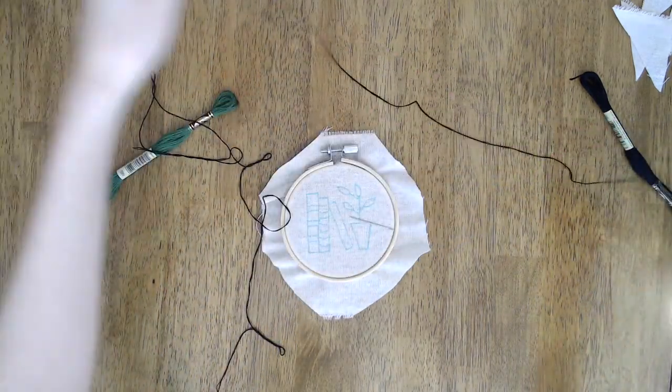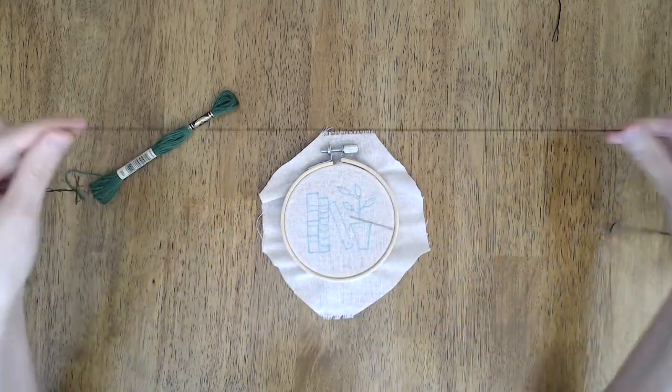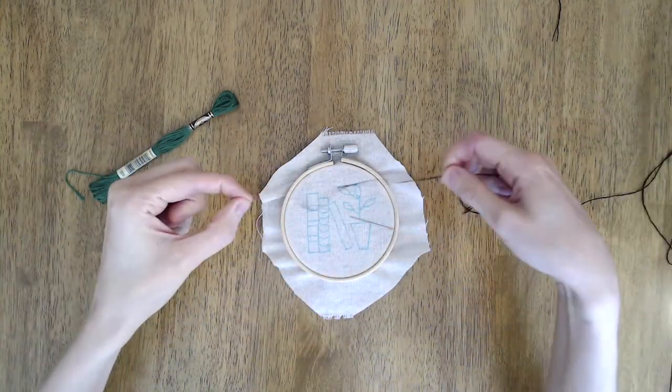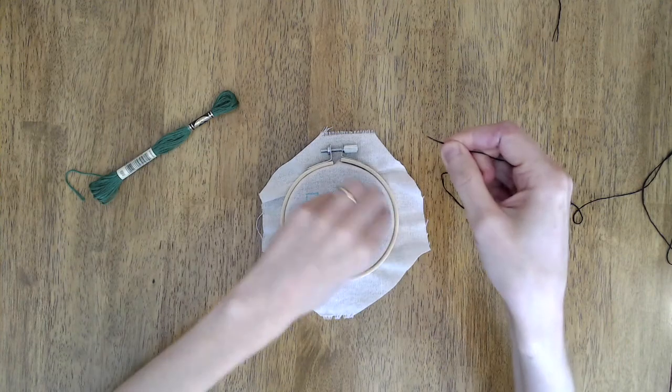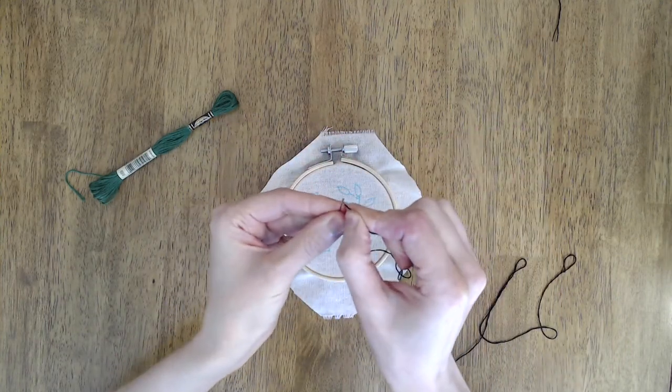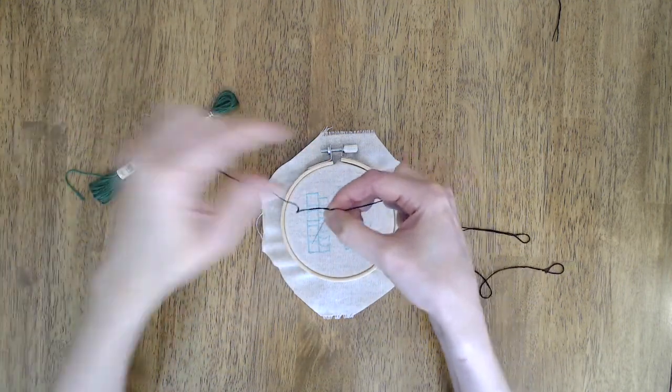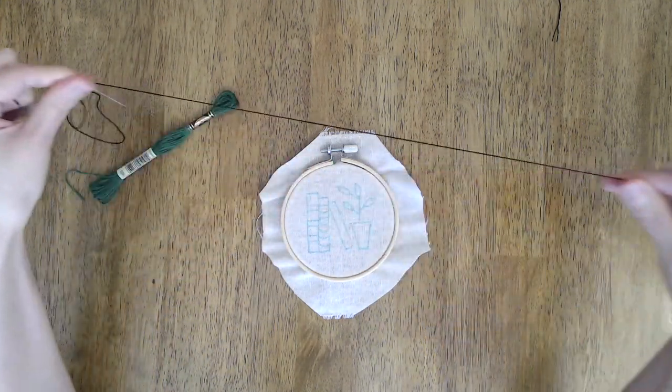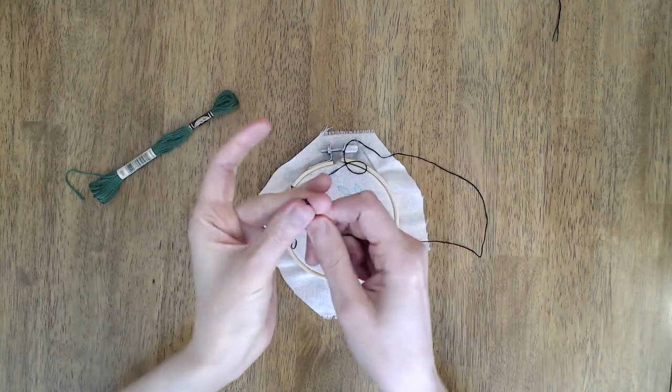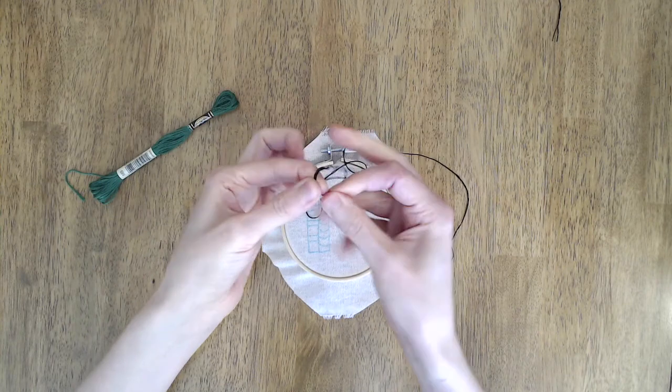Once you've got your two lengths of floss you'll set aside one and take the other and thread the needle with it. You'll want to pull it all the way through and then tie the two ends together. So this way you're actually stitching with all six strands and you don't have to worry about one end of the floss slipping out of the needle.